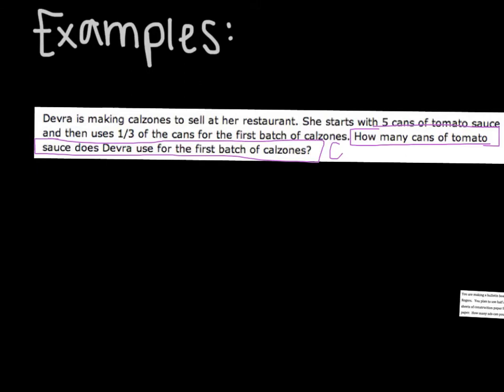Step number two. You're going to read and then underline the important information, which is basically your numbers and the labels that go with them. So as I'm reading, I'm going to look and underline for that important information. Debra is making calzones to sell at her restaurant. She starts with five cans. I'm going to note one-third of the cans for the first batch of calzones.